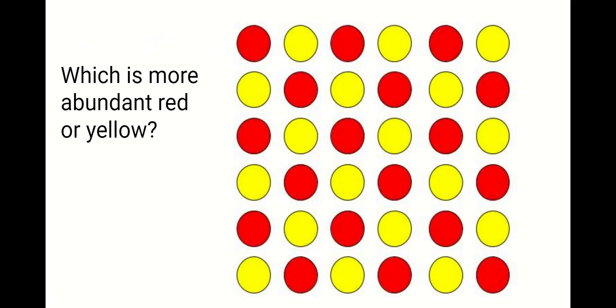So which is more abundant in this sample, red or yellow dots? As you look at it you might see that you have a 50-50 yellow and red sample and so they're equally abundant.